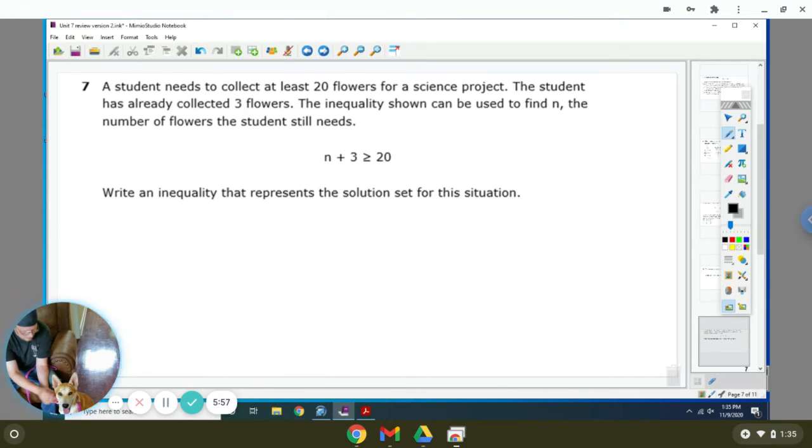A student needs to collect at least 20 flowers for a science project. The student has already collected three flowers. The inequality can be used to find N, the number of flowers the student still needs. Right inequality represents the solution set for this situation. So we're going to subtract three from both sides. So you get N is greater than or equal to 17.